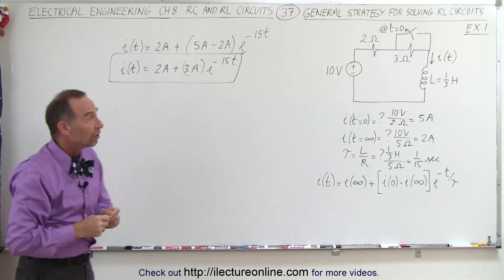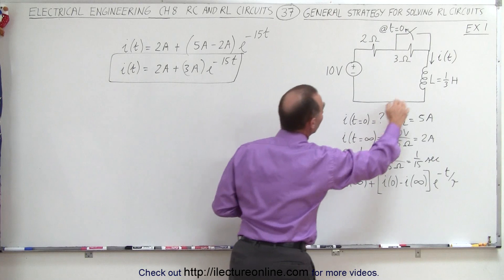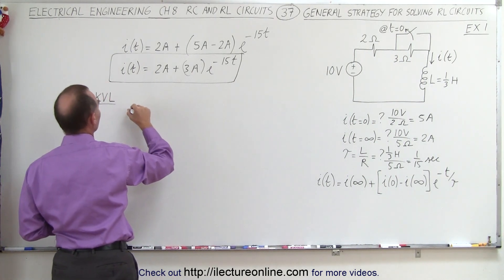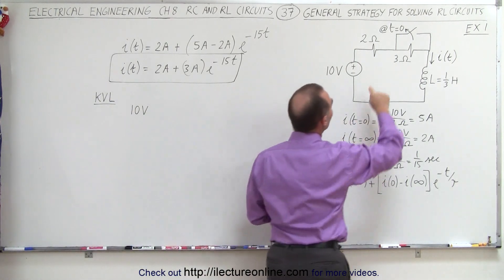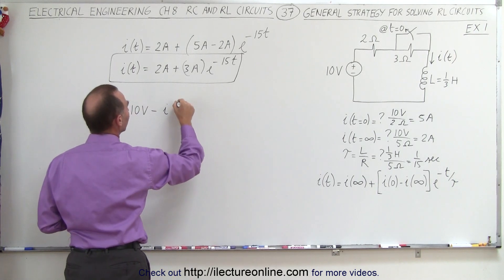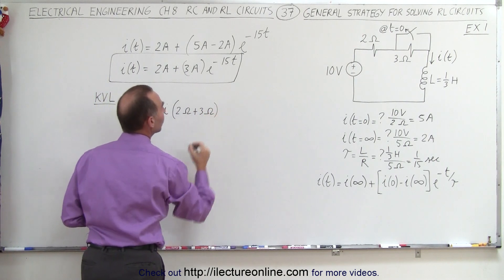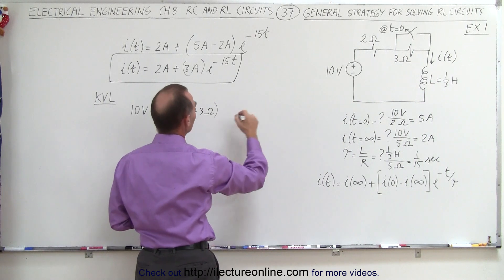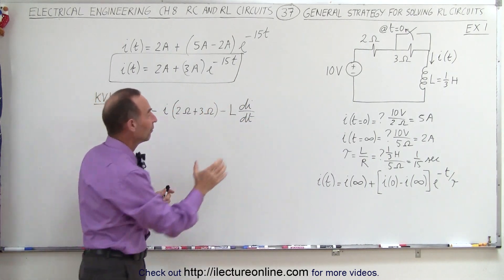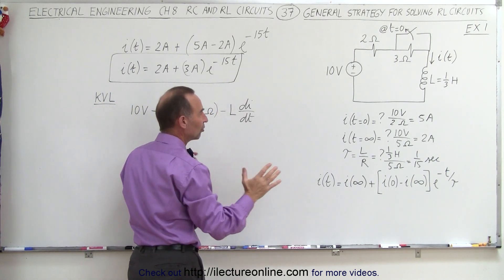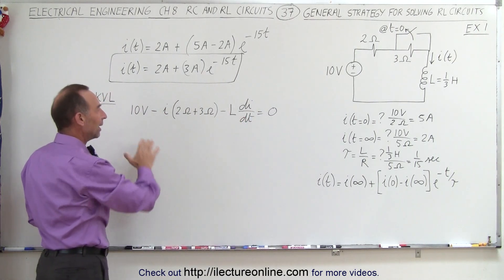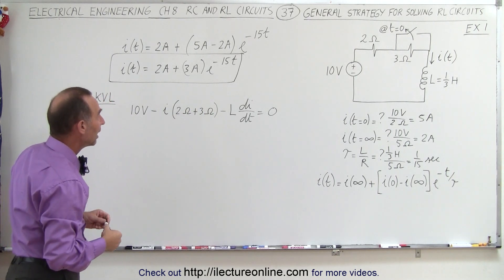Now to see if we did this correctly, we can check using Kirchhoff's voltage law — adding up all the voltages going around the circuit. Using KVL, first we go across the 10 volts, then across the two resistors. There will be a voltage drop across those two resistors: minus the current times the resistance, which is 2 ohms plus 3 ohms, a total of 5 ohms. Then across the inductor, the voltage will be minus the inductance times the change in current with respect to time. There's only a voltage drop across the inductor while the current is changing, and the whole expression should add up to zero.